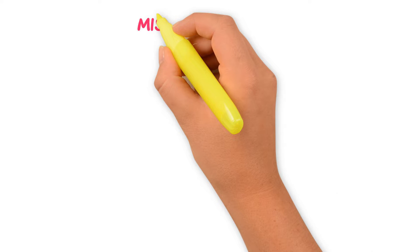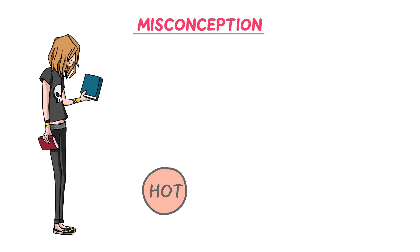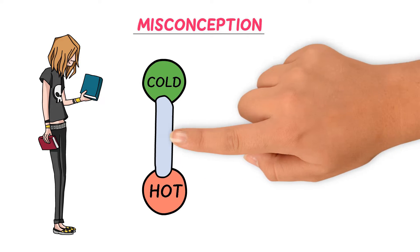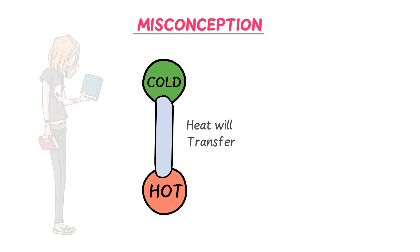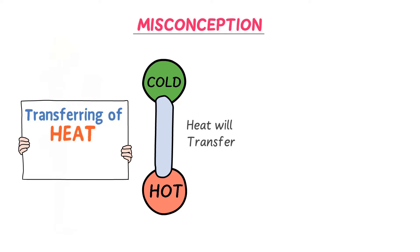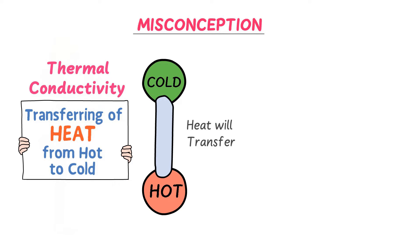Many students misunderstand the concept of thermal conductivity, so note this down. Consider a hot object and a cold object. Now if I connect these two objects using a metallic rod, heat will transfer through this metallic rod to the cold object. This transferring of heat, or heat conduction, through the metallic rod from the hot object to the cold object is called thermal conductivity.